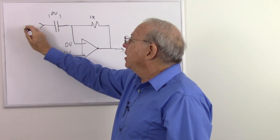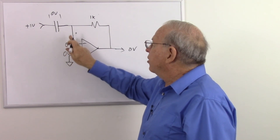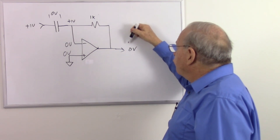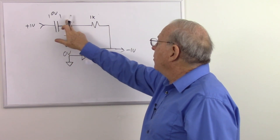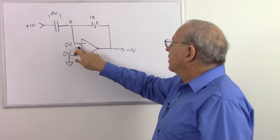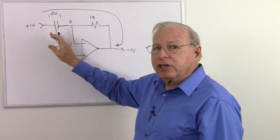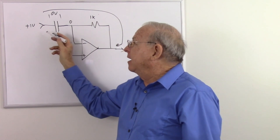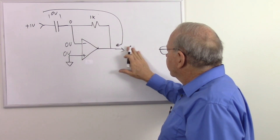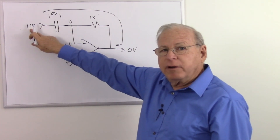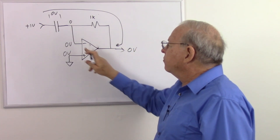Now let's change the input to plus one volt. The capacitor still has zero volts across it, so the summing junction jumps up to one volt. The op-amp drops the output to minus one volt to bring the summing junction back to zero. But now current flows through the capacitor and it starts charging, building up a voltage that pushes back against the current. Eventually the capacitor charges fully, current drops to zero, the op-amp has nothing left to compensate, and the output goes back to zero volts.